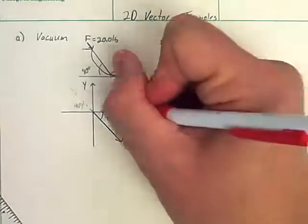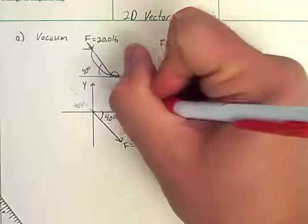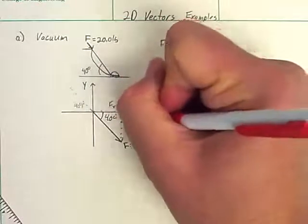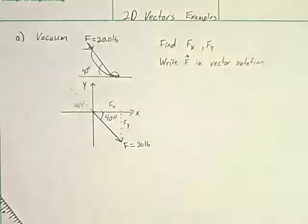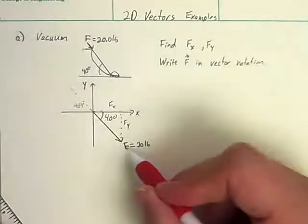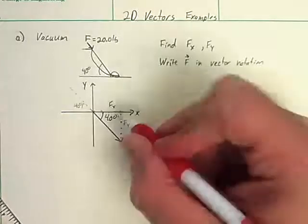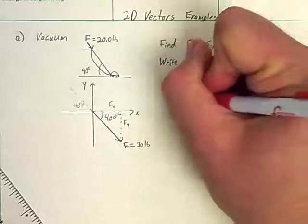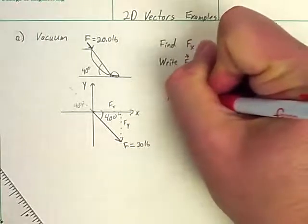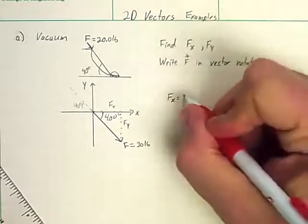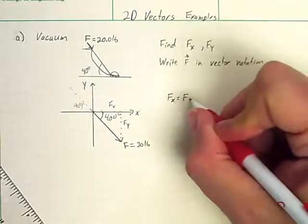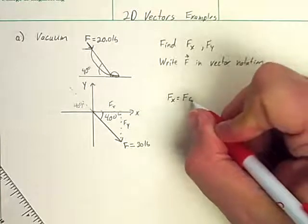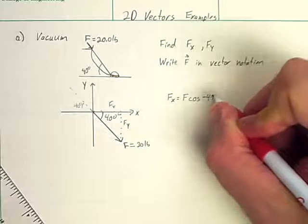Alright, and for this particular problem, what we want to do is break it down into Fx and Fy. If we remember from our rules in the past of breaking down vectors, we can use that this is a right triangle and so Fx is going to be F times the cosine of negative 40 degrees.